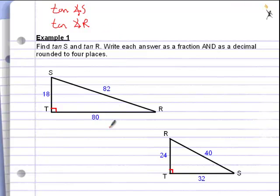Either way, know that we're not looking for a side anymore. We are looking for angles. We're also told to write each answer as a fraction and as a decimal rounded to four places.